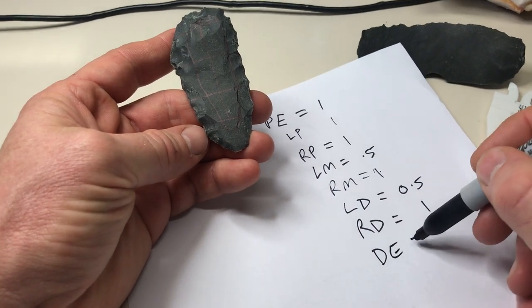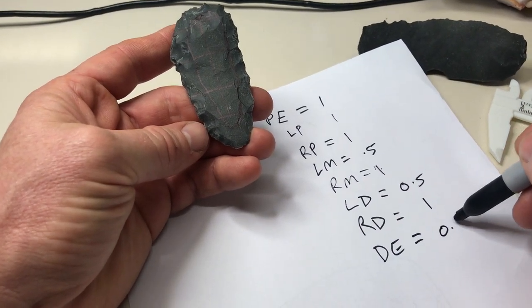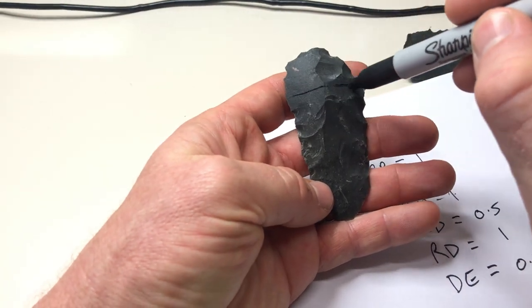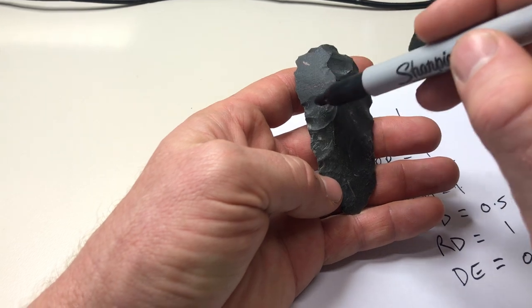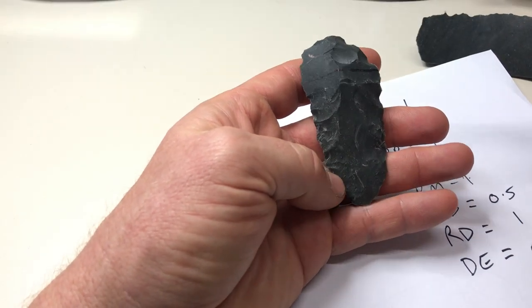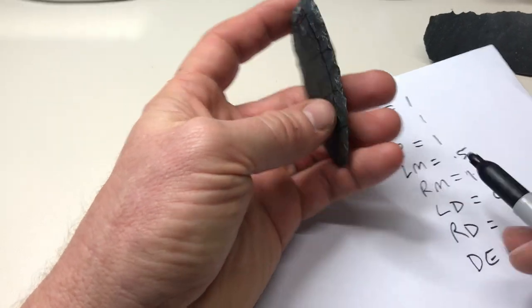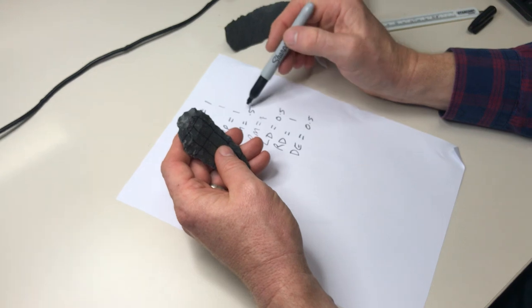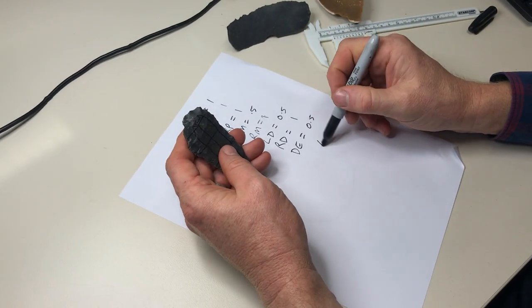And for the distal end, none of the retouch penetrates into that inner zone there, so distal end equals 0.5. And if we had a zone anywhere on the flakes, for instance on the dorsal side in our left proximal perhaps, we might say that there's no retouch here at all, so that would be given as a score of 0. So then we would add those up: 1, 2, 3, 4, 5, 6, 6.5 out of 8.